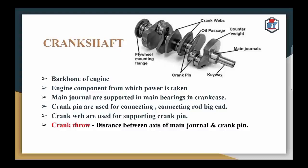The crankshaft consists of the crank pin, the crank web, and the crank throw. The crank throw is defined as the distance between the axis of the main journal and the axis of the crank pin.